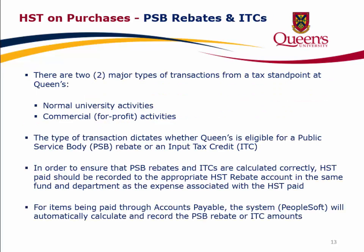PSB rebates and ITCs. There are two major types of transactions from a tax standpoint at Queen's: normal university activities and commercial for-profit activities. The type of transaction dictates whether Queen's is eligible for a public service body (PSB) rebate or an input tax credit (ITC). In order to ensure that PSB rebates and ITCs are calculated correctly, HST paid should be recorded to the appropriate HST rebate account in the same fund and department as the expense. For items paid through accounts payable, the system (PeopleSoft) will automatically calculate and record the PSB rebate or ITC amounts.